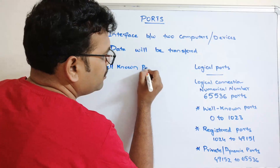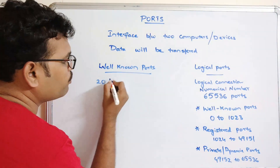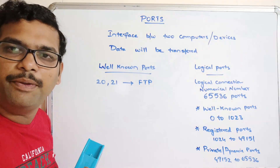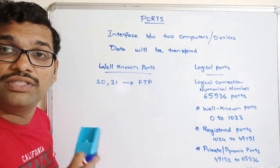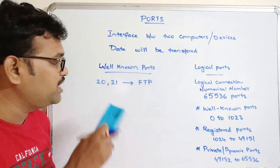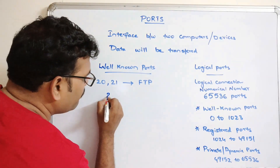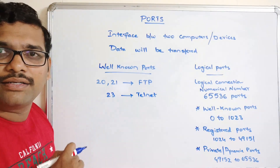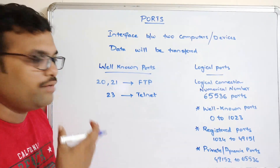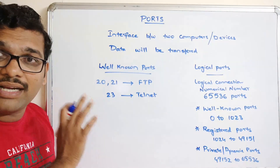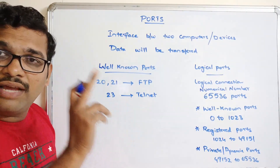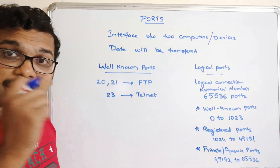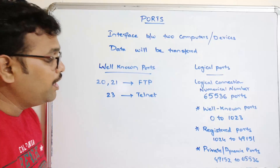Some well-known ports are: port numbers 20 and 21, which are used for FTP — File Transfer Protocol — to exchange files between systems. Port number 23 is Telnet, similar to an intranet; if data is exchanged on the intranet, port 23 is assigned. These are reserved ports and cannot be changed — if you use FTP, the port will automatically be 20 or 21; if you use Telnet, it will be 23.